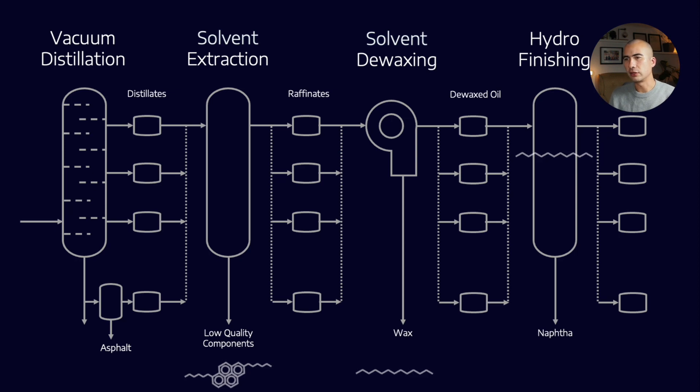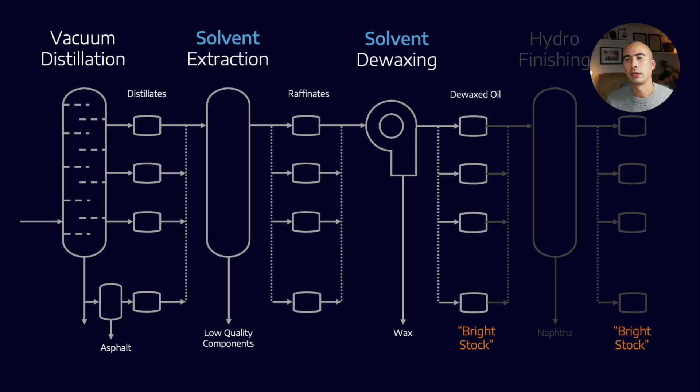Now, what we have at the end of this is what we would call a bright stock. At the end of this process that I've showed, whenever you see bright stock or bright stock 150 or something like that, that refers to a group 1 base oil that has been hydrofinished. However, you'll probably have also seen the term solvent neutral, and that's effectively a group 1 base oil that has not gone through hydrofinishing.